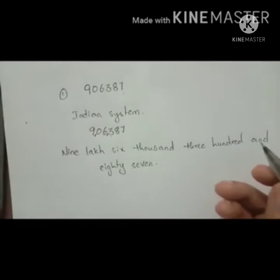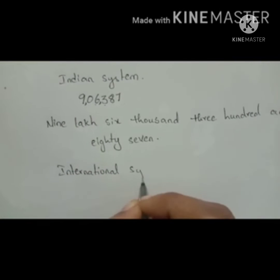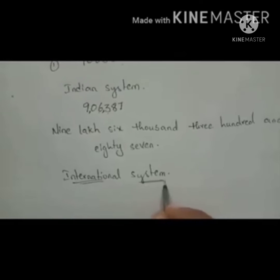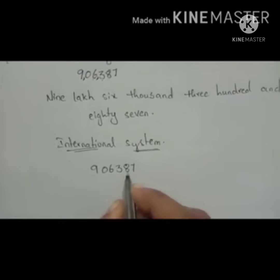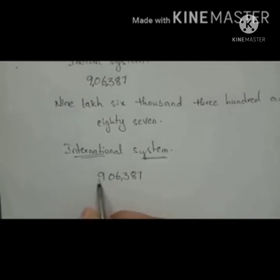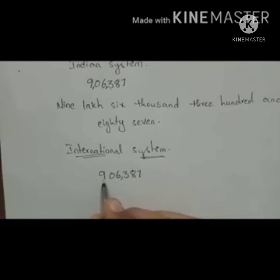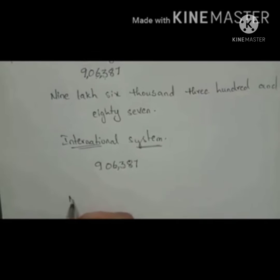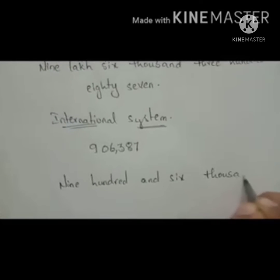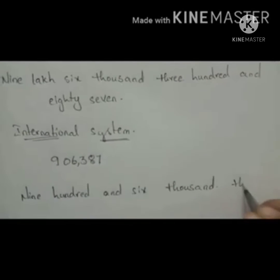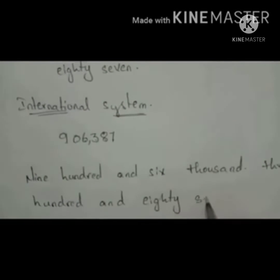Now we write the same number in the international system. The number is 906,387. In the international system, after 3 digits from the right we place the first comma. Since there are only 6 digits, we place one comma: 906,387. Read as: nine hundred and six thousand, three hundred and eighty-seven.